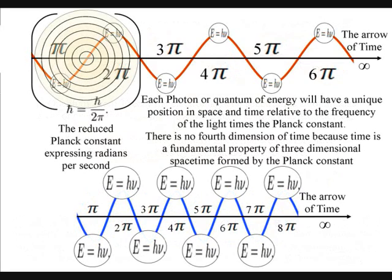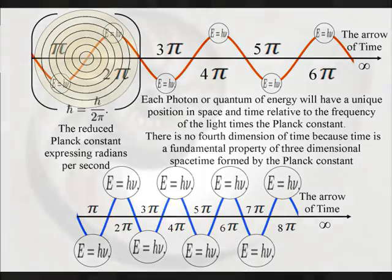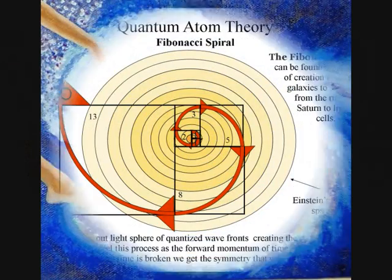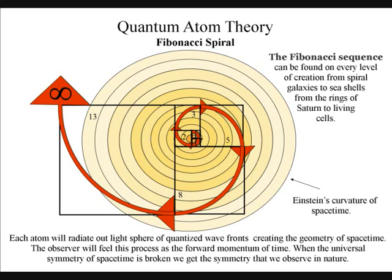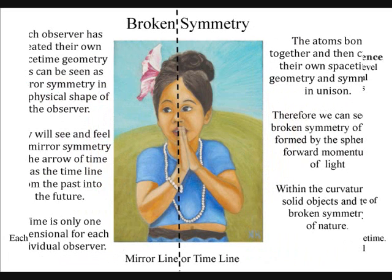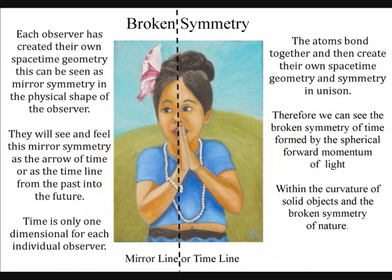Everything is governed by the geometry and symmetry of spacetime, from seashells to spiral galaxies, to the evolution of life itself. Therefore the observer will feel time as only having one dimension, but in reality the observer is creating their own symmetry and geometry in three dimensional spacetime.